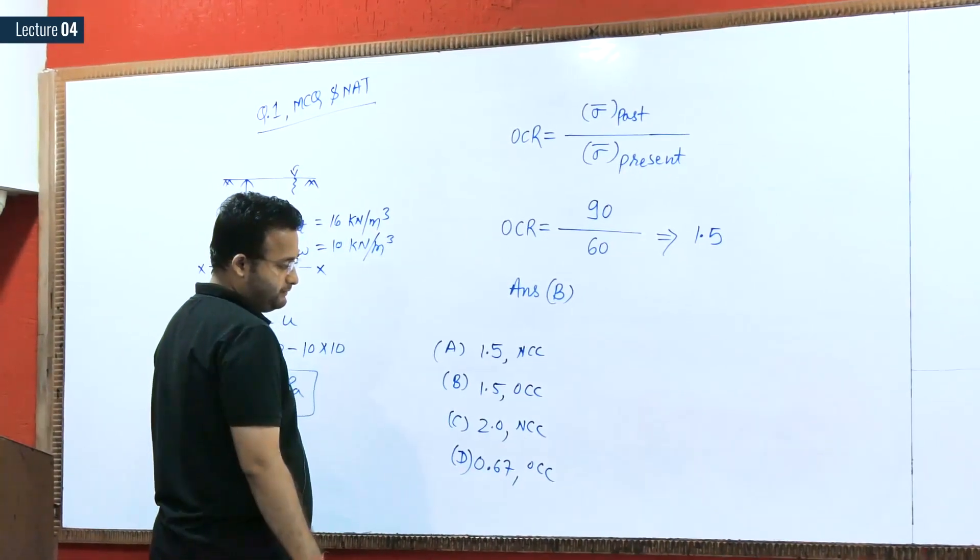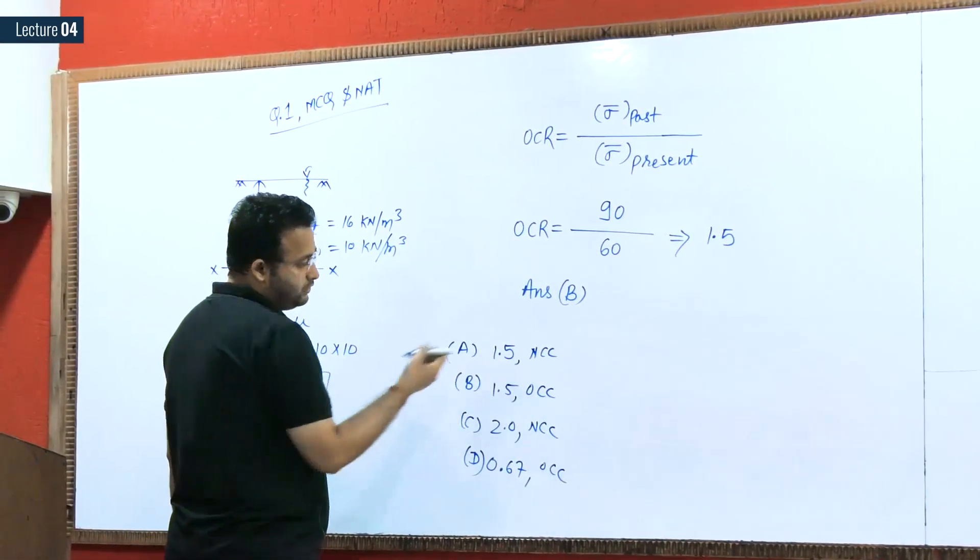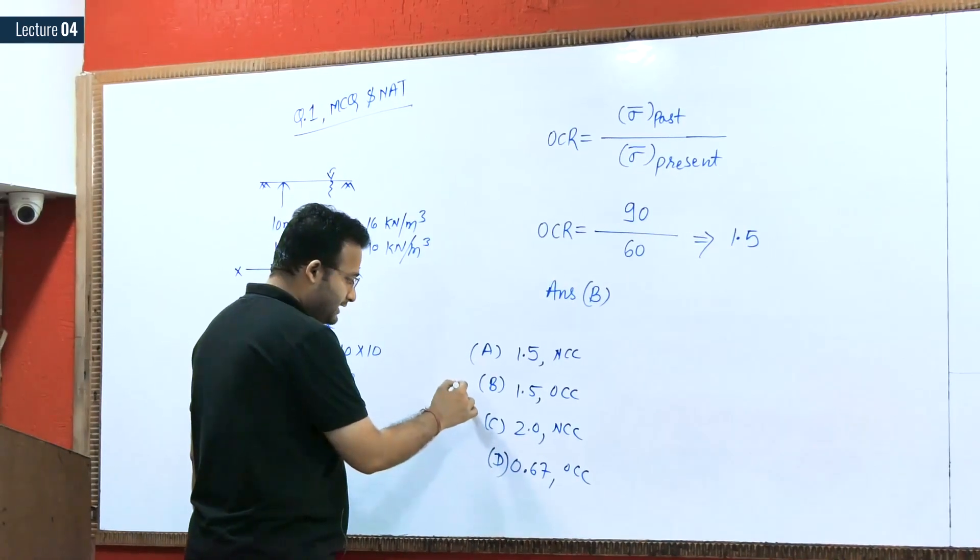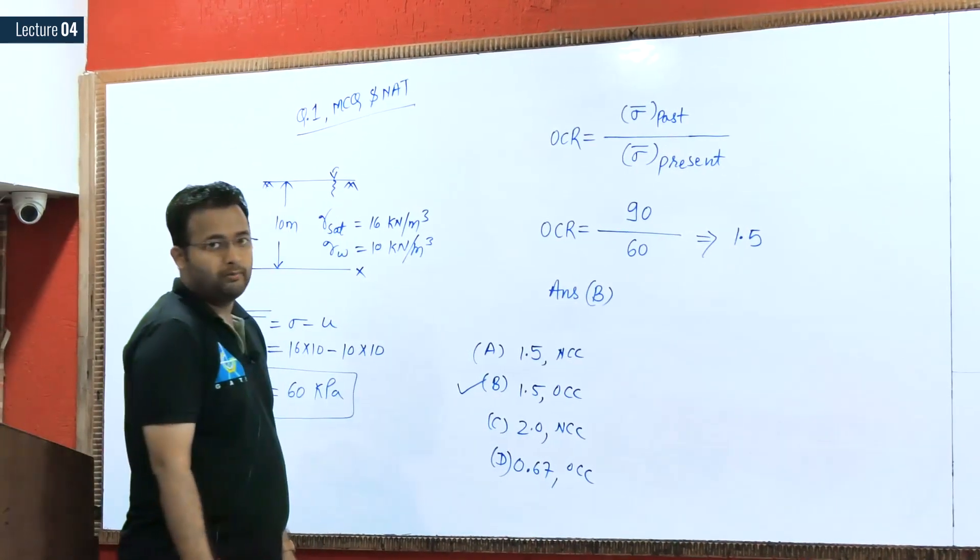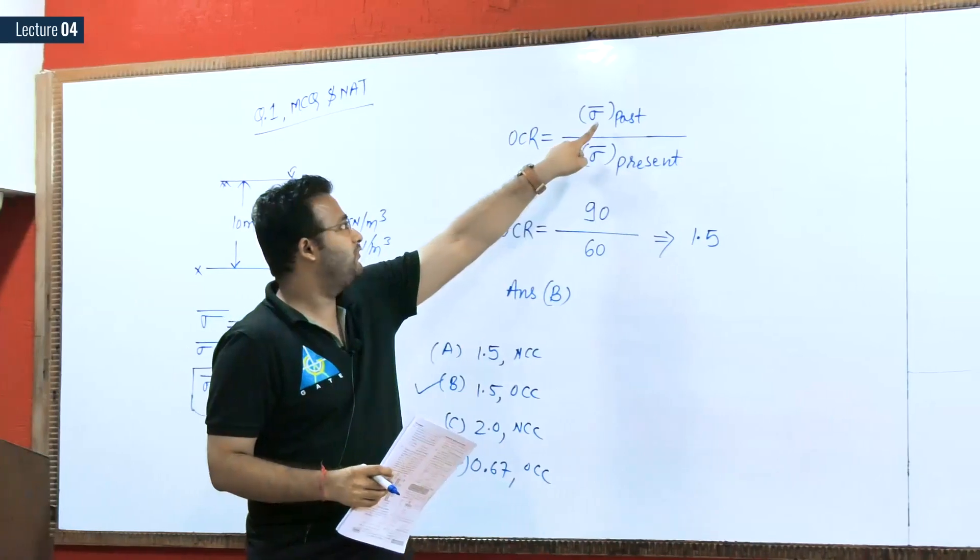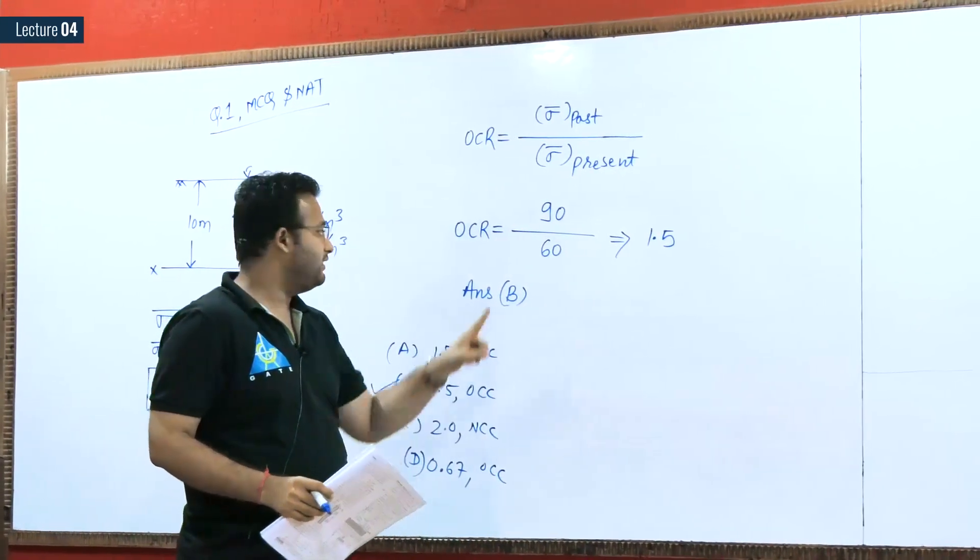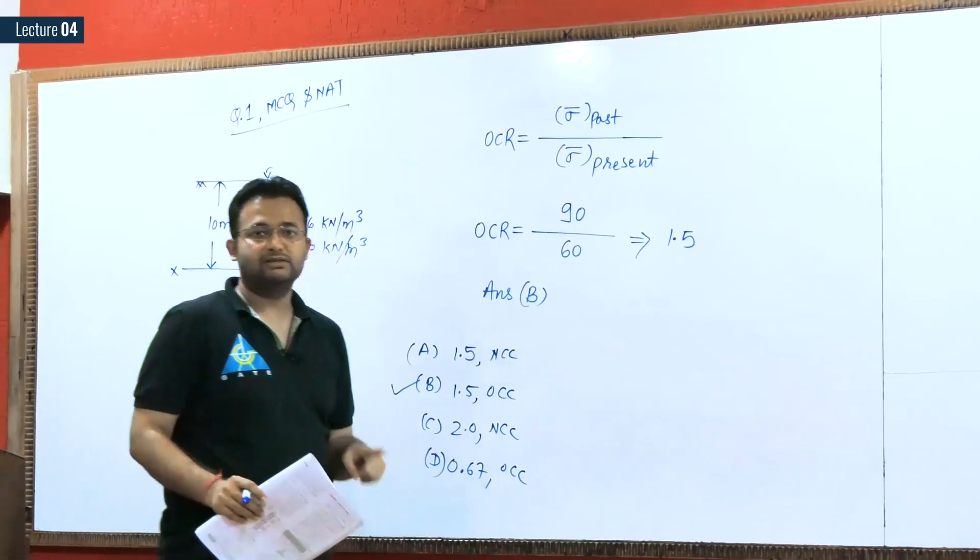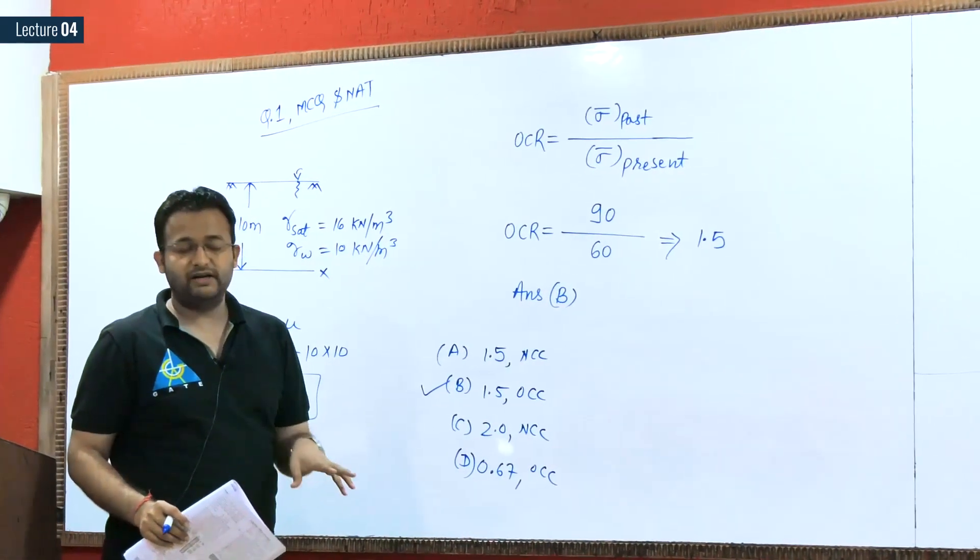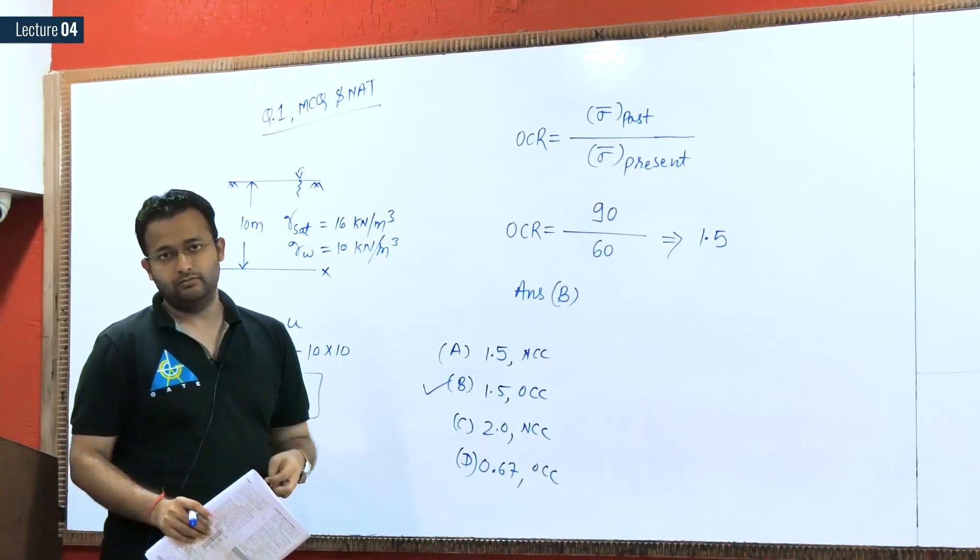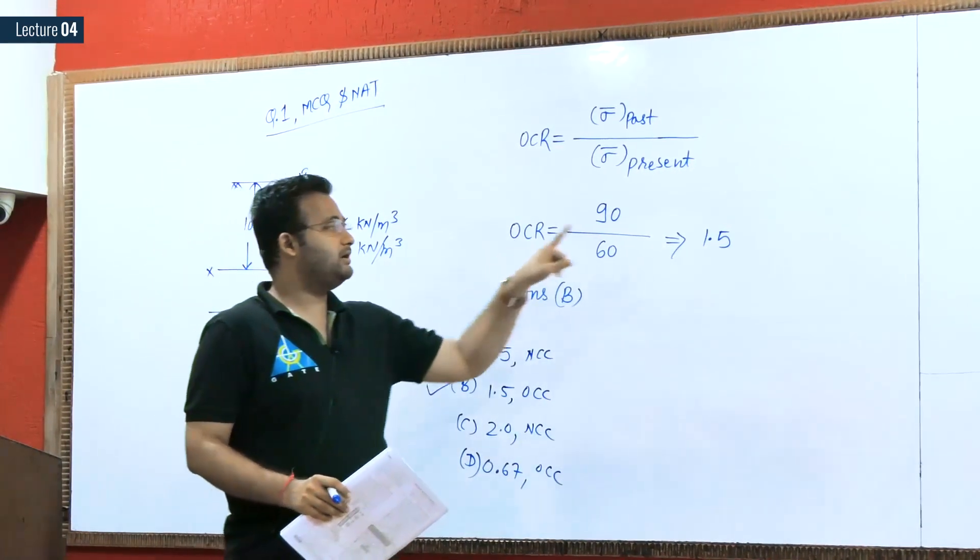They are asking what is your answer. 1.5 is OK, I am getting 1.5 here. So which is my answer, NCC or OCC? Of course my answer is OCC, because in the past we have higher effective stresses—90 kPa—in the present we have less effective stress—60 kPa. Means the soil will be treated as OCC soil.